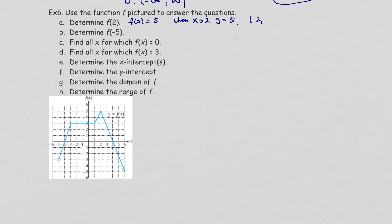For part b, find f(-5): when x = -5, the y value appears to be -3, but it is an open circle, which means there is no point there. So there is no y value — f(-5) has no value, not zero, but no value at all.